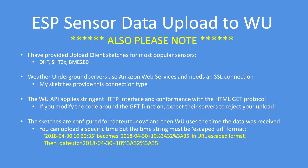I've provided sketches for the DHT range of sensors, the SHT30, 31, 32, and 35, and the BME280. Weather Underground servers use Amazon Web Services and therefore require an SSL connection - I've done all that work for you. The Weather Underground API applies very strict controls on the GET request, so if you modify it in any way don't be surprised if it doesn't work - I spent a long time getting that exactly right. The datetime format requires URL-escape formatting; for example, '2018-04-30 10:32' becomes a URL-escaped string, and the function in the client handles all that for you.